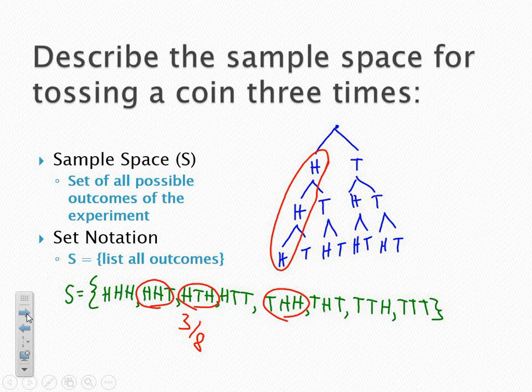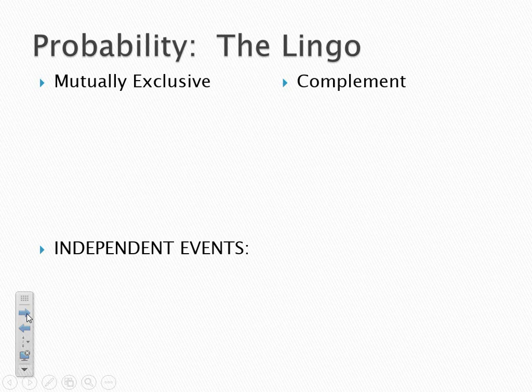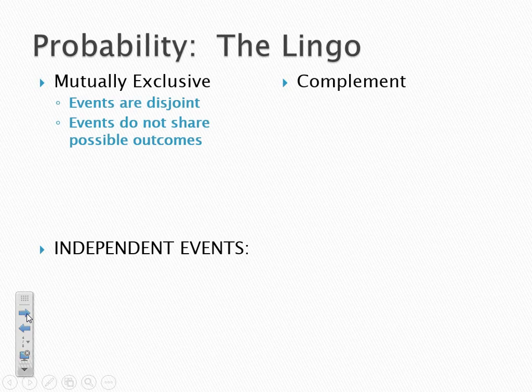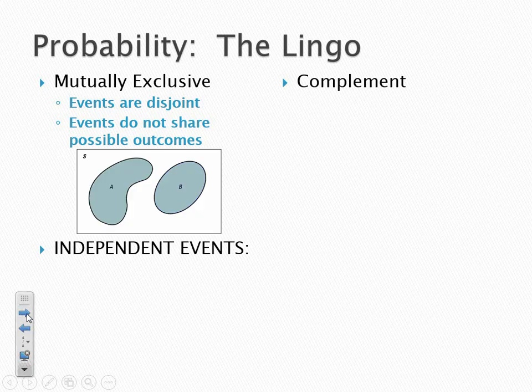Let's continue on with probability lingo. There are three phrases that we'll see quite often: mutually exclusive, independent events, and complement. First, the idea of being mutually exclusive means that the events are disjoint — the events do not share any possible outcomes. In a Venn diagram with two events A and B, mutually exclusive means they share nothing in common. To be mutually exclusive means I am A or I am B, but there is no overlap. These events cannot exist at the same time — we can be one or the other, but not both.